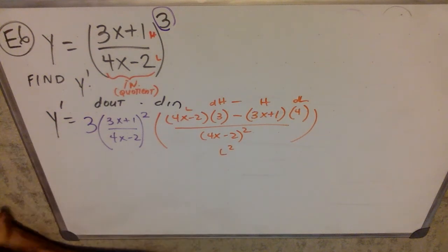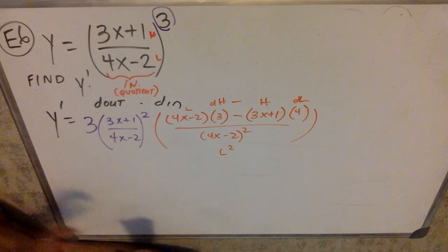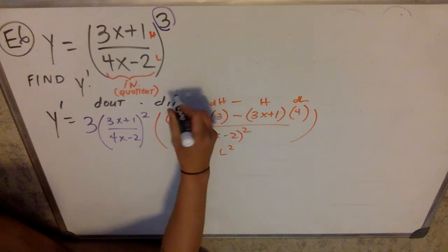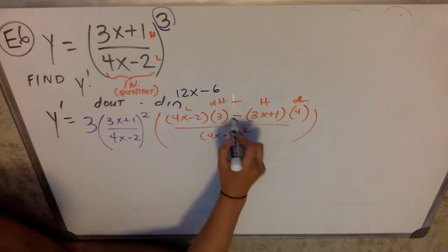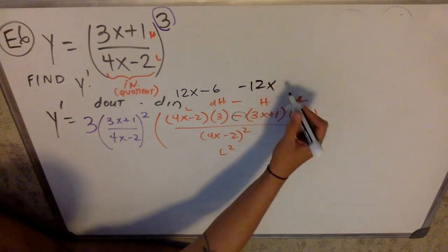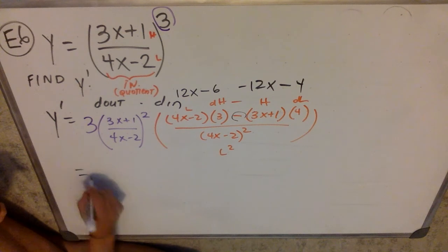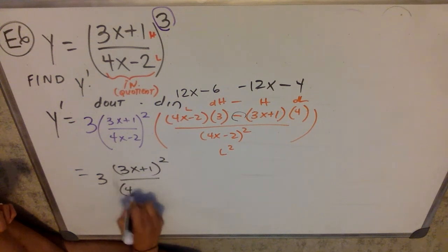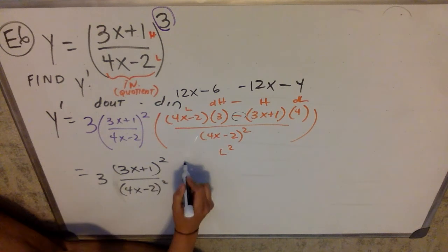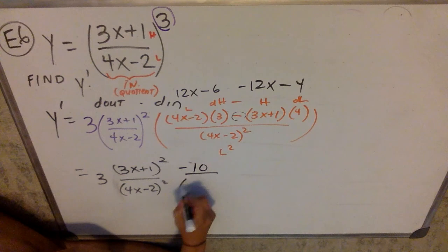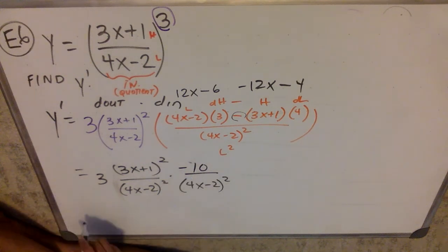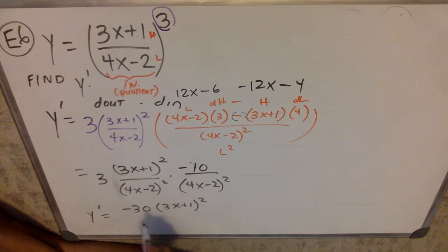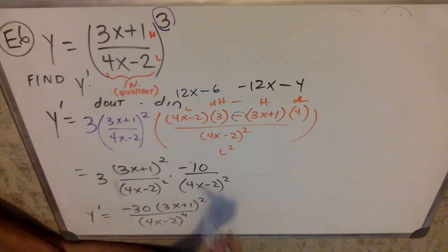Now I'm going to clean that up. The biggest thing to clean up is the numerator. When I distribute the 3, this is going to be 12x minus 6, and when I distribute the negative 4, I get negative 12x minus 4. It seems that I have a 3x plus 1 squared in the numerator and a 4x minus 2 also squared in the numerator, and in this fraction I just have a negative 10 on top over a 4x minus 2 squared. So my y prime ends up being negative 30 times (3x+1)² over (4x−2)⁴, because there were two squared terms that combine. That's it.